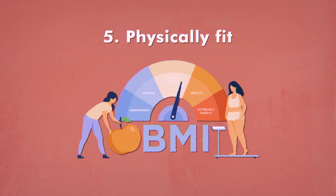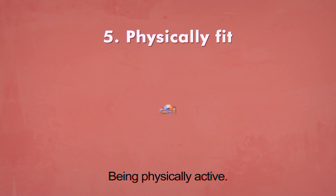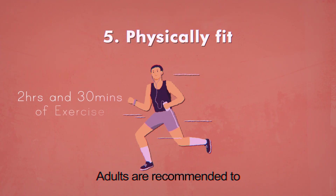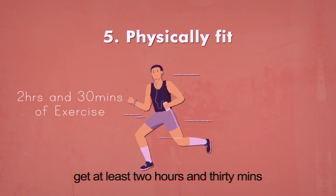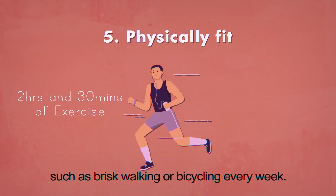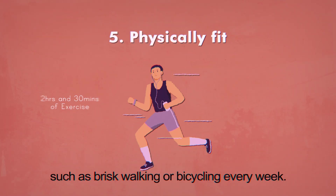Being physically active. Adults are recommended to get at least 2 hours and 30 minutes of moderate intensity exercise such as brisk walking or bicycling every week.